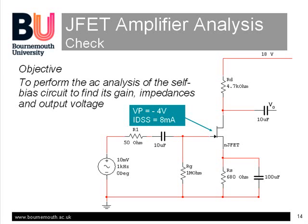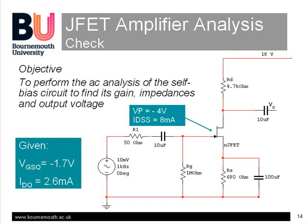Here's the check slide. Remember, our objective in this part is to obtain the gain, output and impedances of the self-biased amplifier circuit. Try it yourself, using these values, and hopefully you should obtain the result shown at the bottom of the slide. If you don't want to start from the beginning, you can assume the results of the DC analysis for the circuit operating point. Good luck.